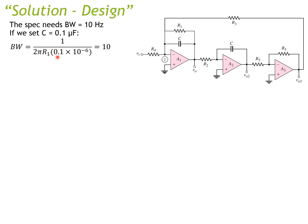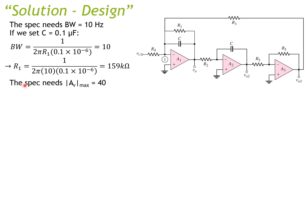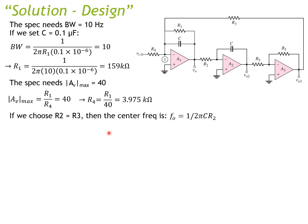From the bandwidth expression we derive R1 = 159 kilohms. The specification also requires a maximum voltage gain of 40, so R1/R4 = 40. Using the known R1, we calculate R4 = 3.975 kilohms.